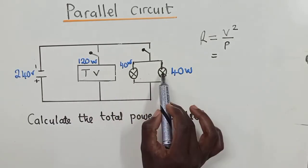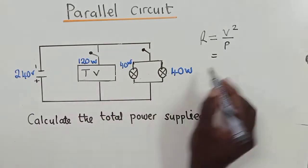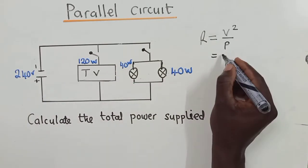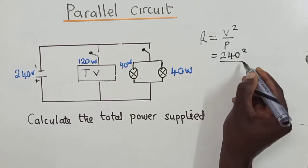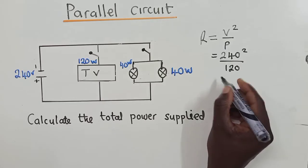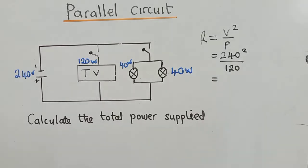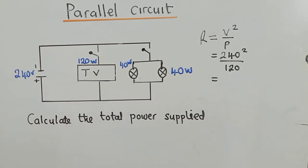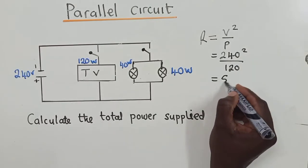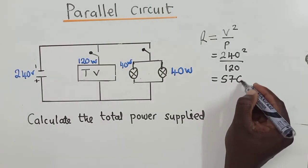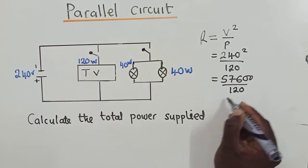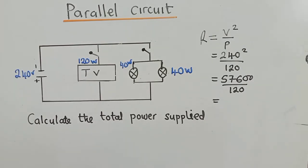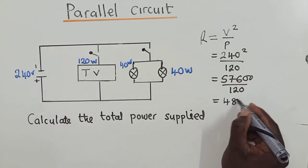We have a TV, a lamp, and another lamp. For the TV, the resistance R1 = voltage squared over power, which is 240 squared over 120. That gives us 57,600 over 120, and when we divide we get 480 ohms. This is the resistance for the TV.